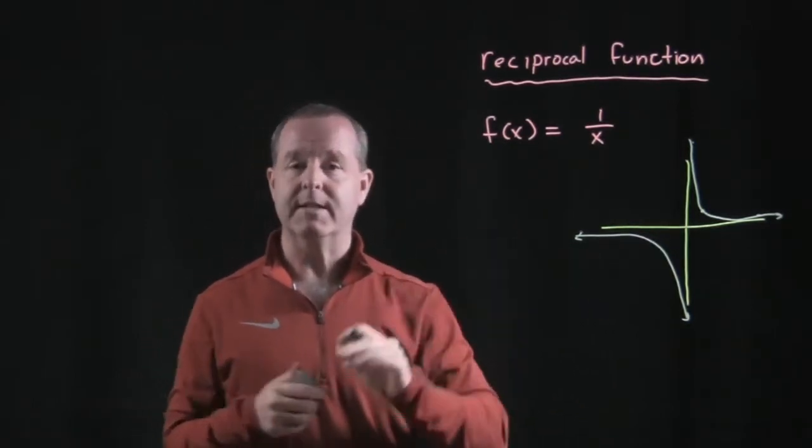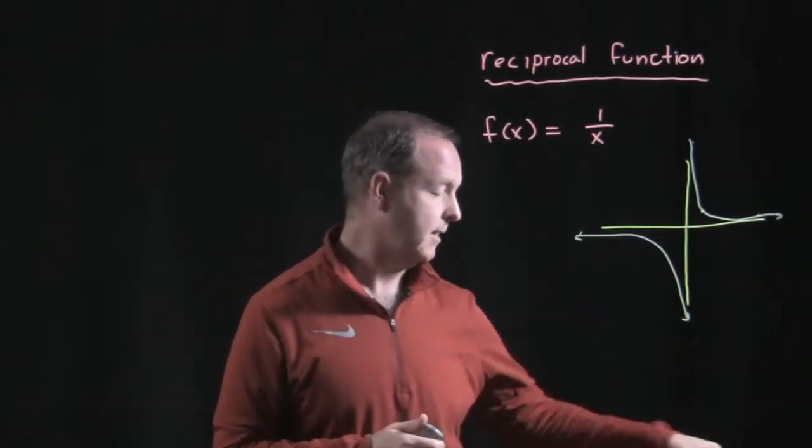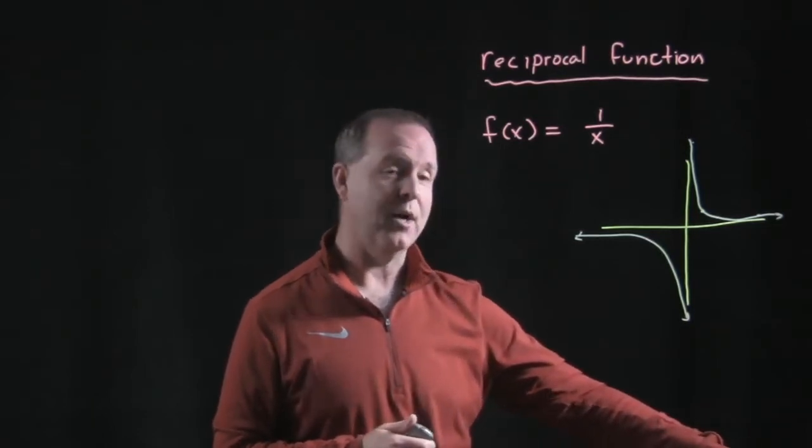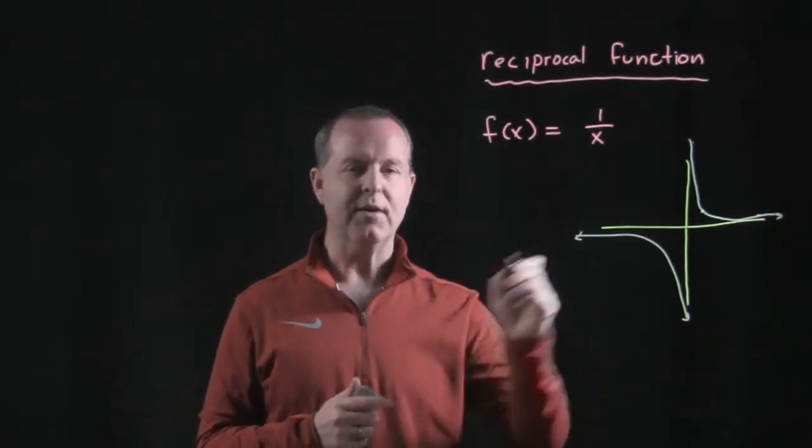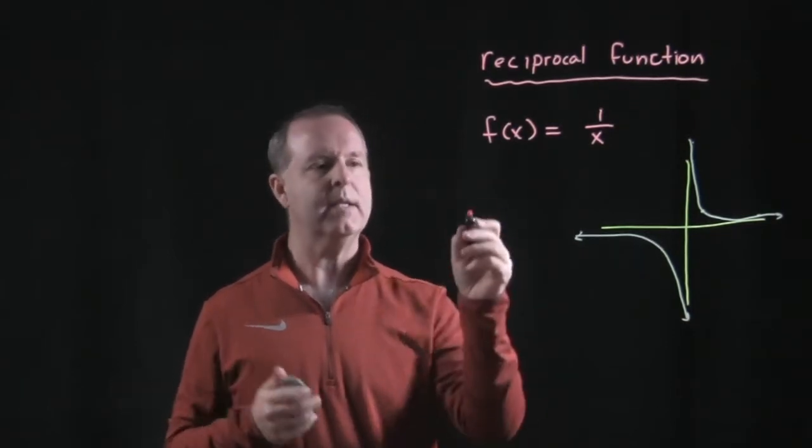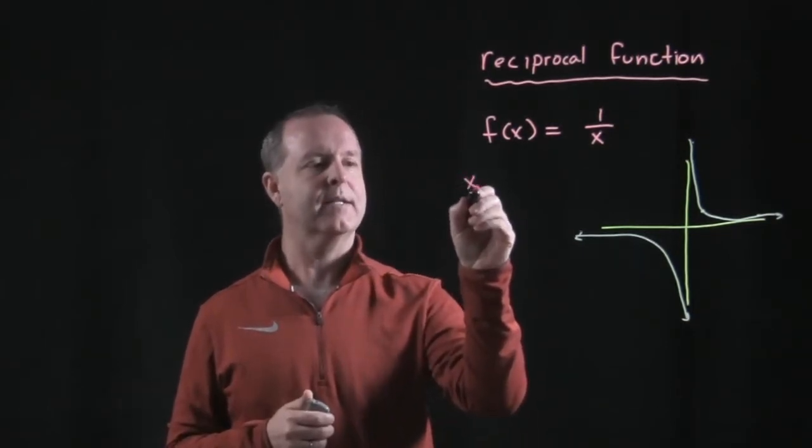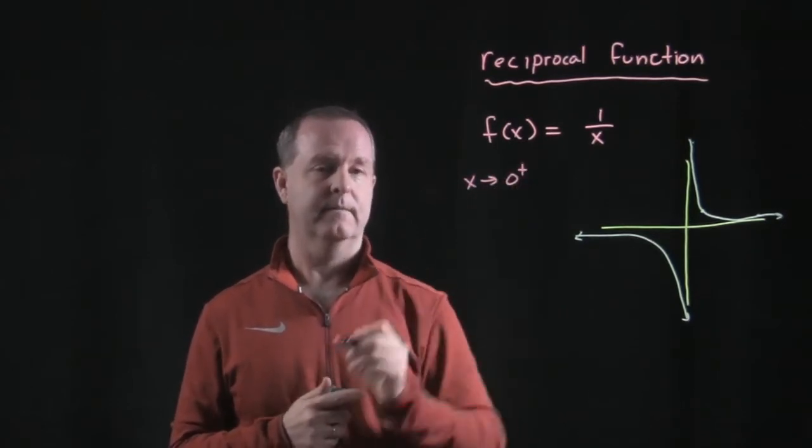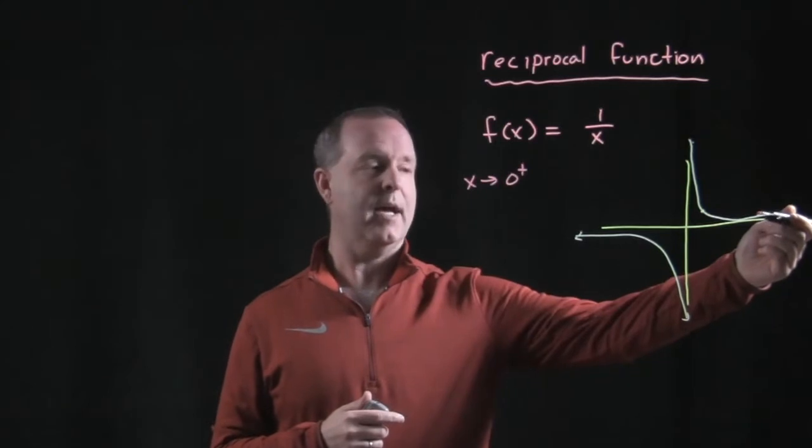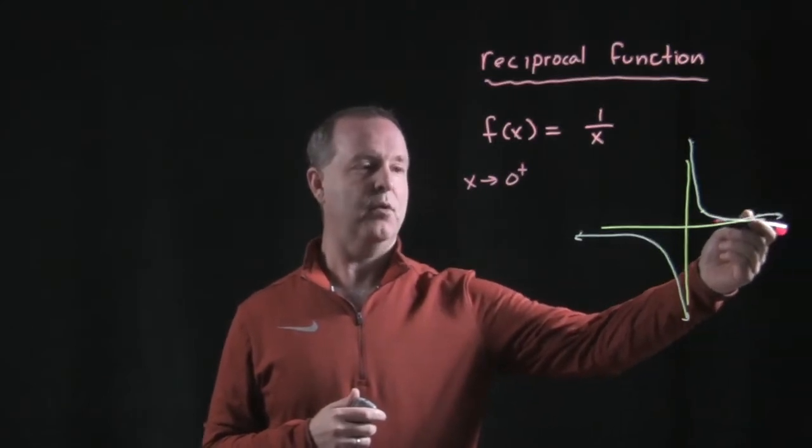So that's what a typical reciprocal function looks like. A couple of observations I want you to be aware about is what's happening at the different values of x. And the way we determine that is, well, let's say what happens as x is approaching 0 from the right side. So I'm on the right side, my values of x are approaching 0.